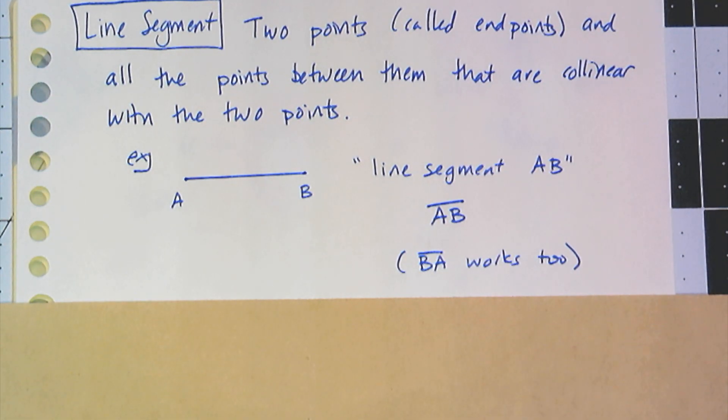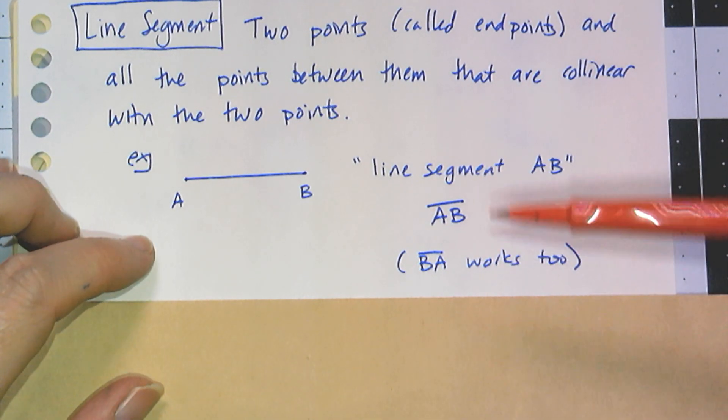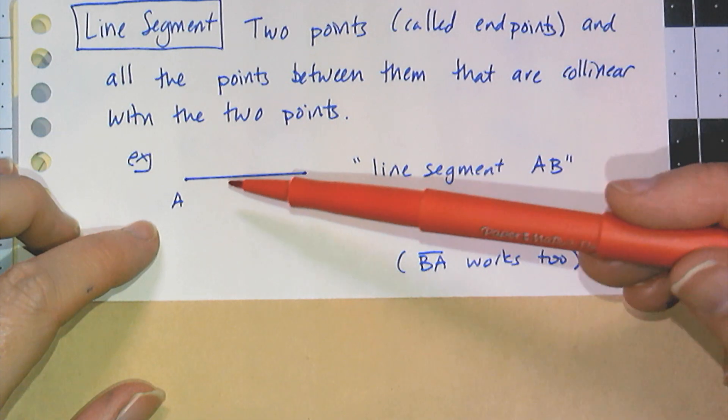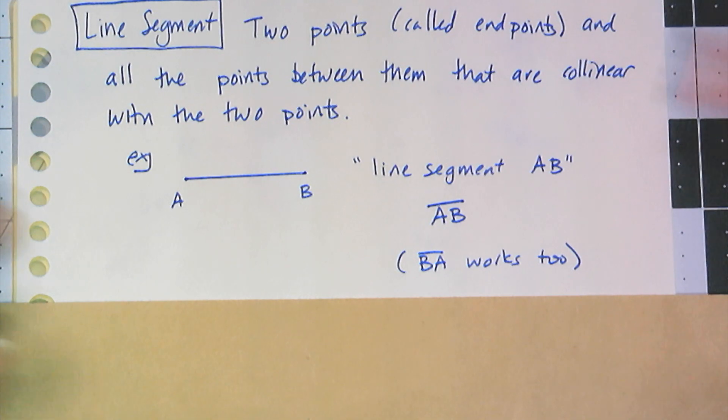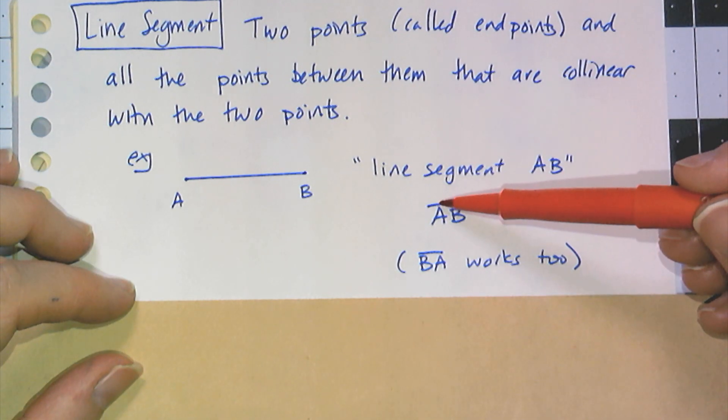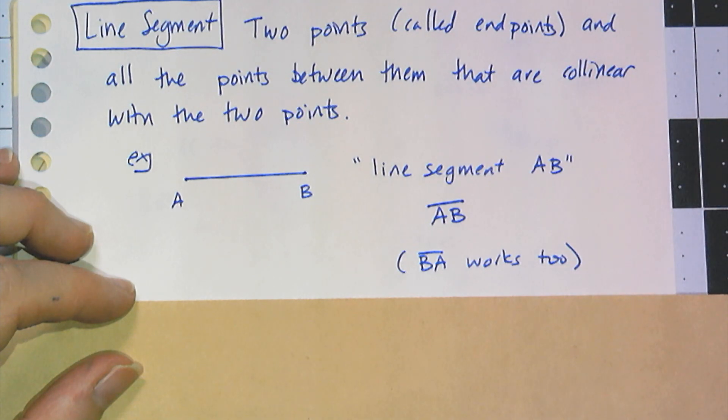We name them by their endpoints. I can say line segment AB or line segment BA. The order does not matter in this case. The symbol for line segment is just that bar over the two letters.